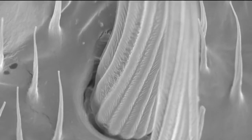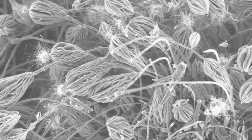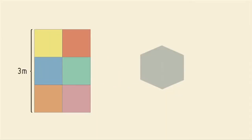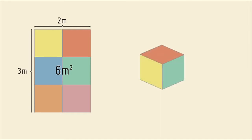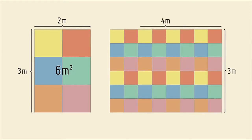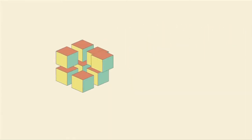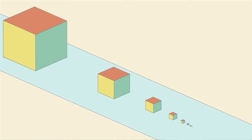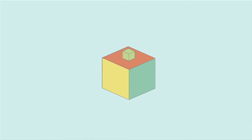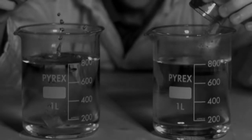The nanoworld isn't just unusual looking — things behave differently there too. One reason for this is surface area. If you take a cube and lay the surface flat, you can see how much of that cube can react with the outside world. If you divide the same cube into 8 little cubes, the surface area is twice as big. If you keep making smaller cubes, the surface area becomes immense. More surface means more area for reactions. This is why powdered sugar dissolves faster than sugar cubes.